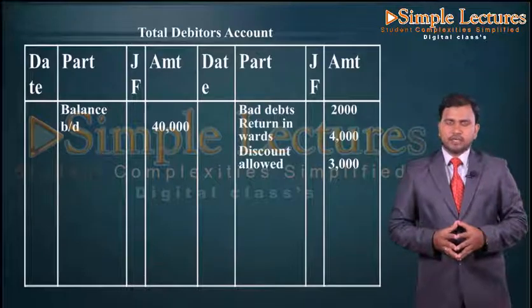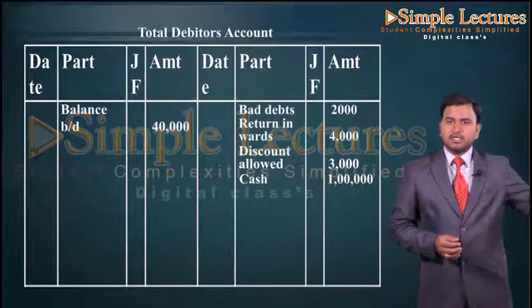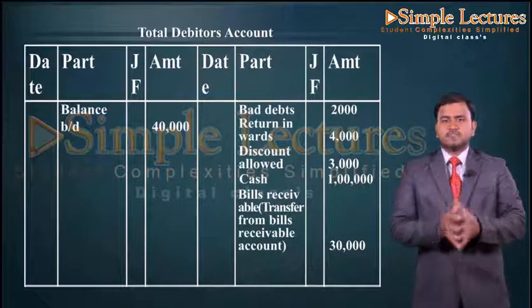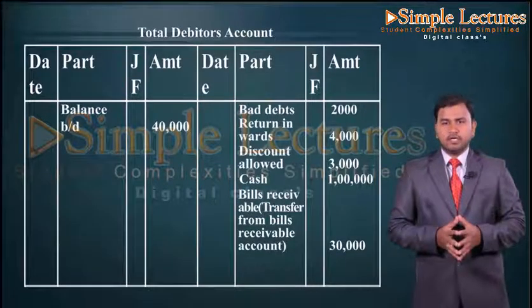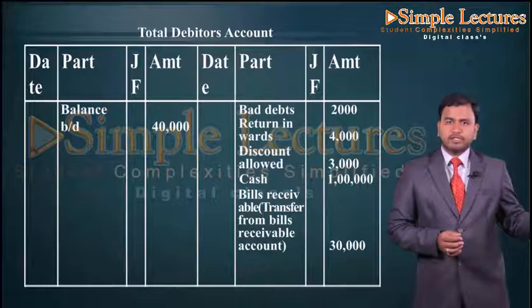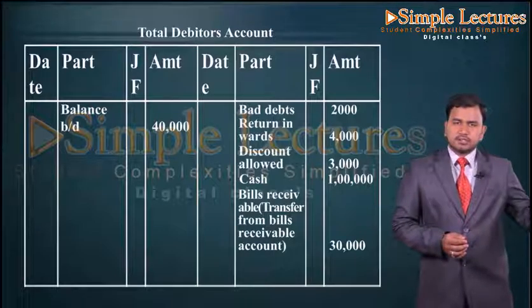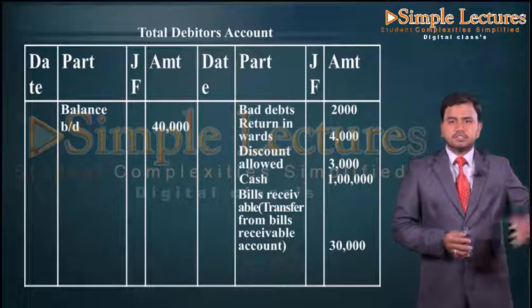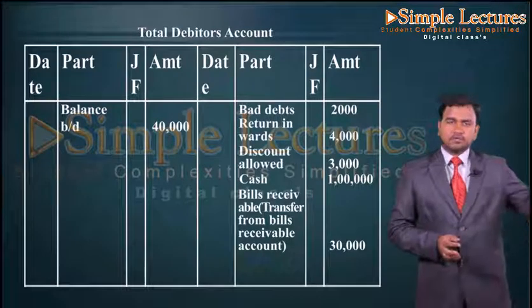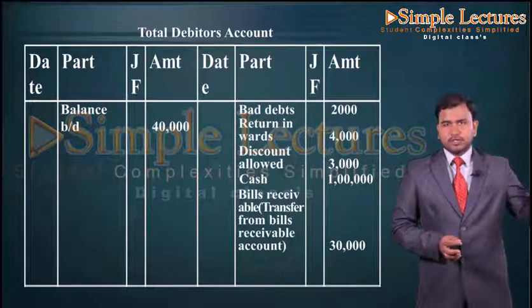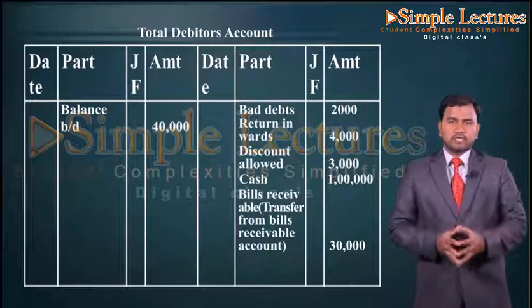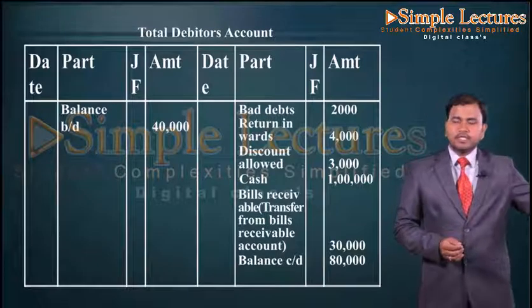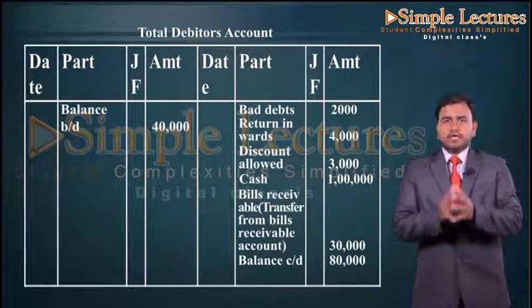Then we have cash received, again recorded on the credit side: cash one lakh. Then we have bills receivable transferred from the bills receivable account, again on the credit side: bills receivable — in bracket, transfer from bills receivable account — thirty thousand in the outer column. Then the closing balance of total debtors account, again on the credit side: balance carried down eighty thousand.